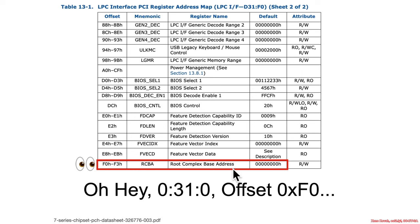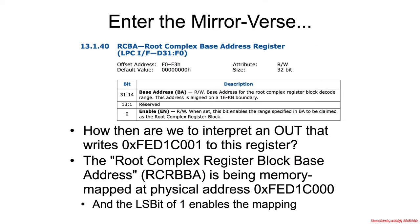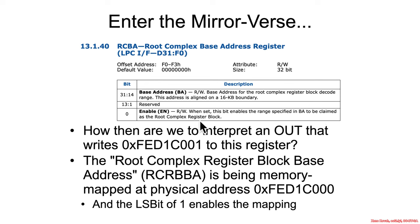Offset F0 has something called the root complex base address. If we go into the datasheet a little further, we find the root complex base address register, and we know that a value was written there — FED1C001. The least significant bit 1 seems to be an enable bit and the upper bits seem to be a base address. The enable means the range specified in the base address is to be claimed by the root complex register block.